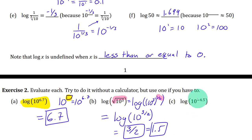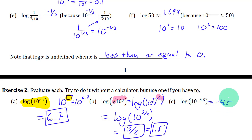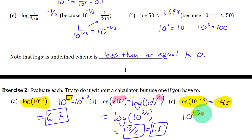What is the exponent of 10 that results in 10 to the power negative 4.5? That's just going to be negative 4.5. Whatever this result is, it's the exponent of 10 that gives you 10 to the negative 4.5. So negative 4.5 works there.